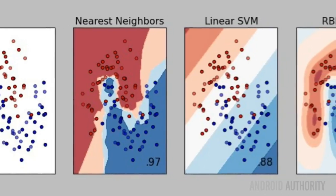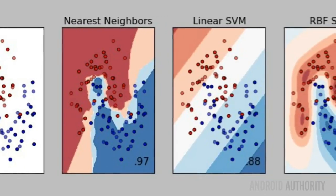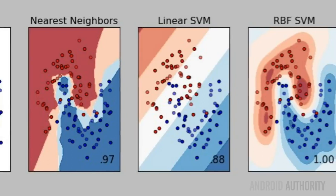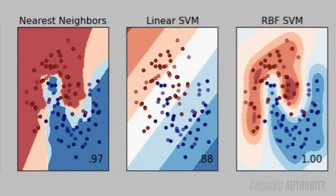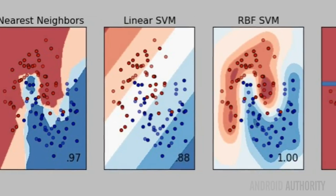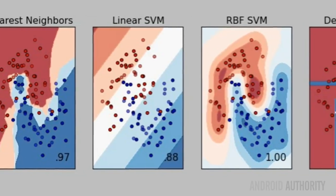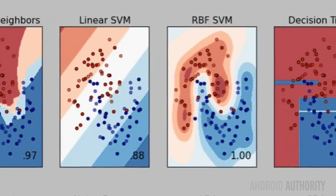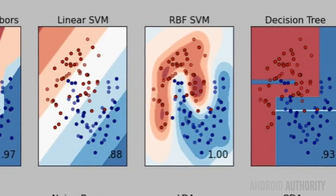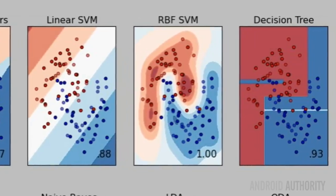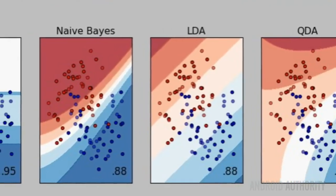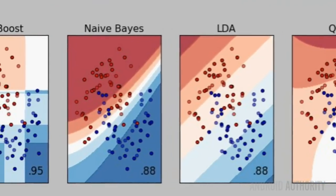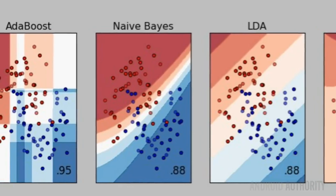Everything in the upper left belongs to the red category and the bottom right is blue. However, in the middle there is some crossover. If you get a new previously unseen sample which fits somewhere in the middle, does it belong to the red category or the blue category?